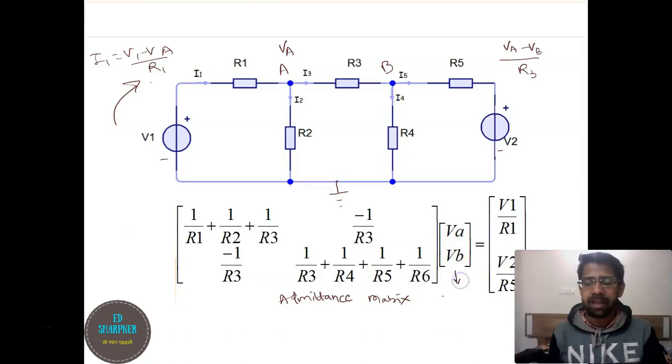This is the voltage matrix. So you have Y times V equals I, and we have current going in this direction and current going in this direction for the last matrix.